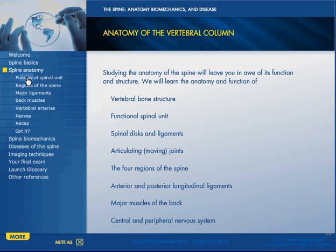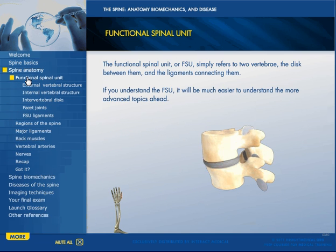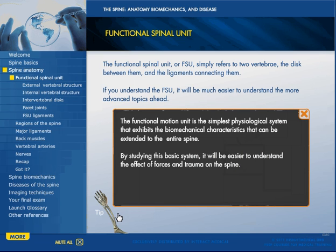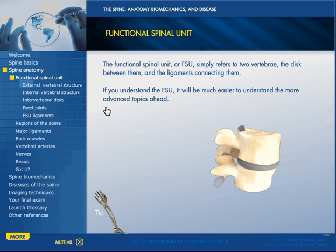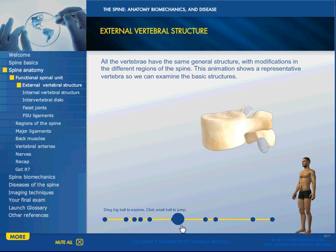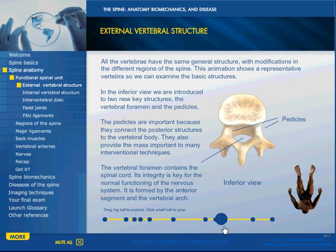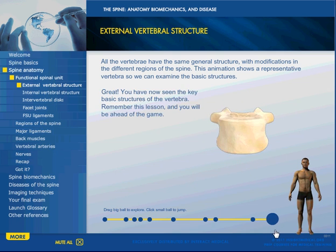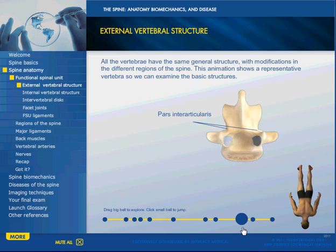Then we jump to the spine anatomy section, and now we're getting a little more detailed about the anatomy of the spine. We include little tips periodically that add a bit of interest. Then we dig down a little deeper into external vertebral structure, looking at just one vertebra, naming the different elements of it, with a little figure that represents the orientation of the vertebra.